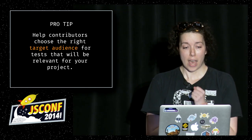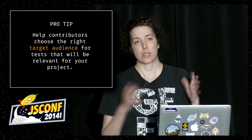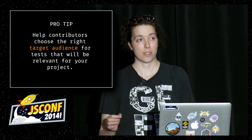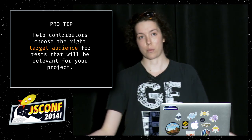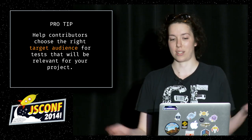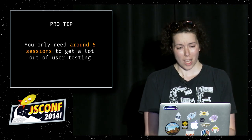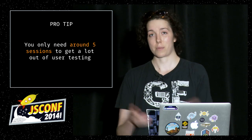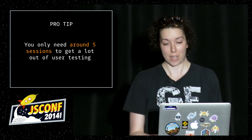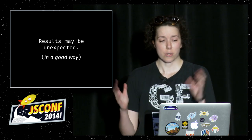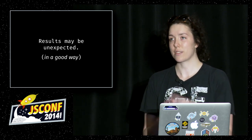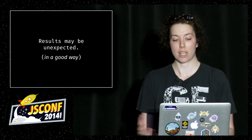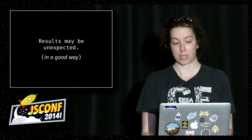Some tips: help contributors choose the right target audience. It's really awesome to take advantage of contributors' different communities that you may not have access to, but it's also really important to say which users are not relevant. You only need around five sessions to make it really valuable — you don't have to expect your contributors to do thousands of surveys. We found that user testing done by community provided different interpretations and areas of focus even with the same test than our core team, which is really cool because it takes advantage of cognitive diversity.